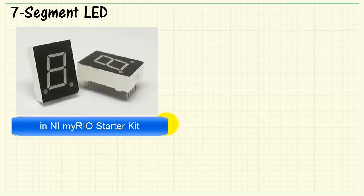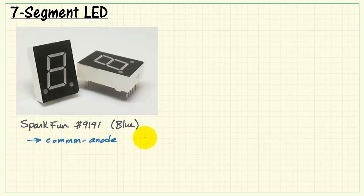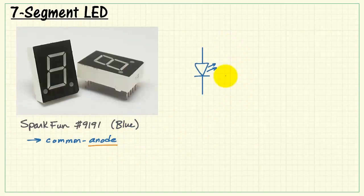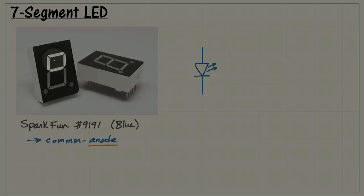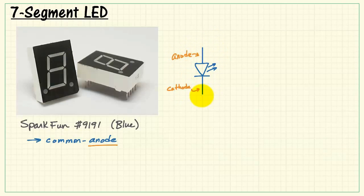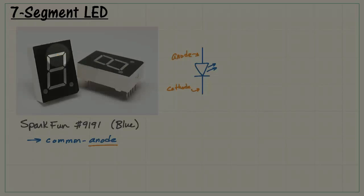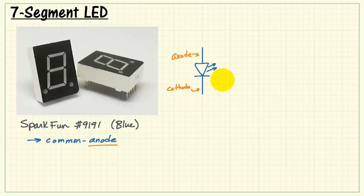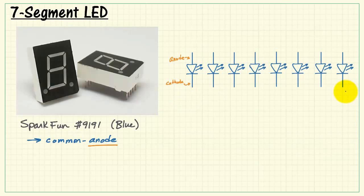Here's the 7-segment LED that is included in the NI MyRio Starter Kit. It's also available from SparkFun. This is a common anode device. Each one of the segments is an individual light-emitting diode. For example, one segment might be an individual diode with anode and cathode. As you work your way around, each one of these segments, as well as the decimal point, is its own LED.